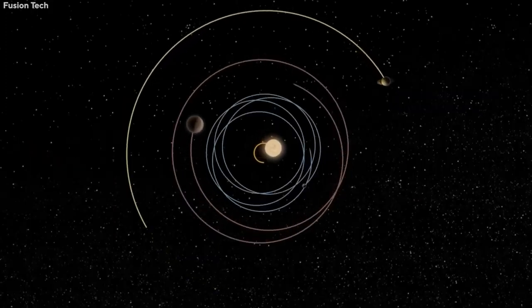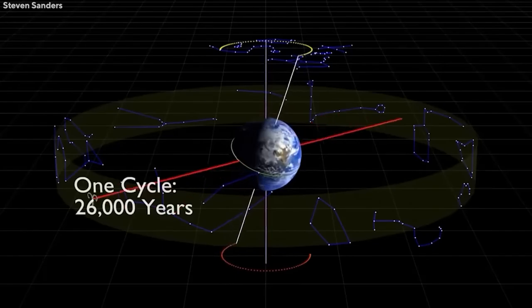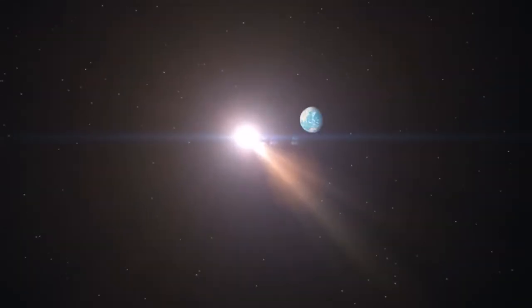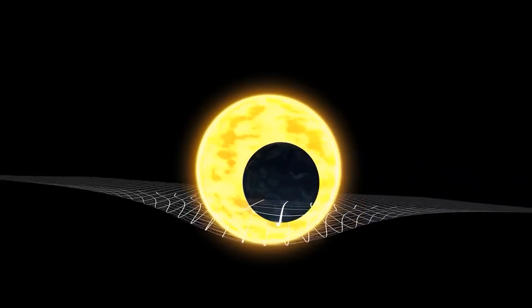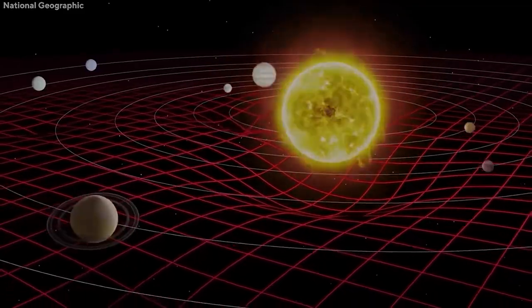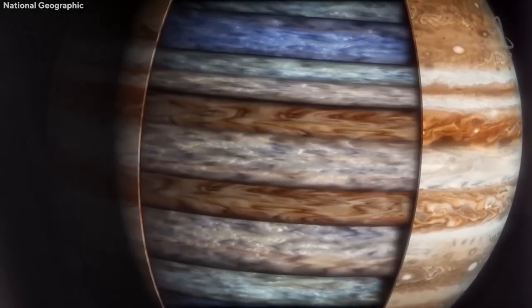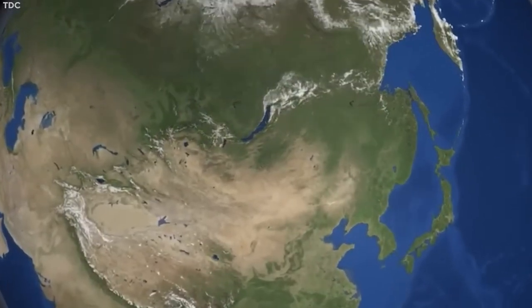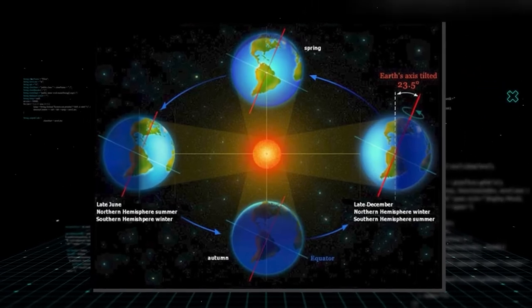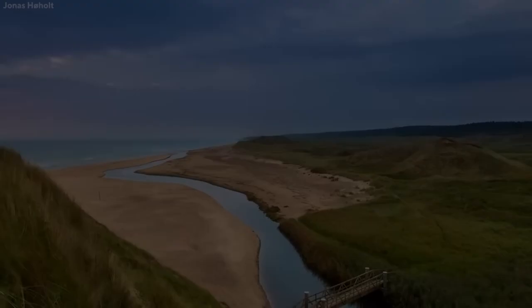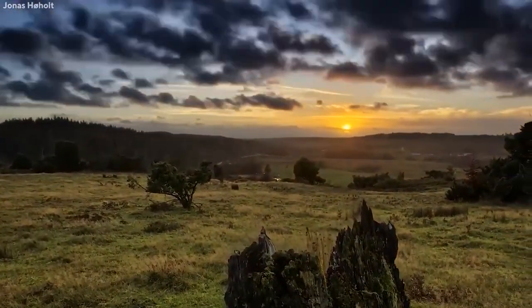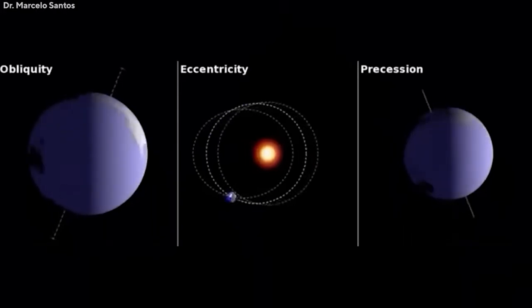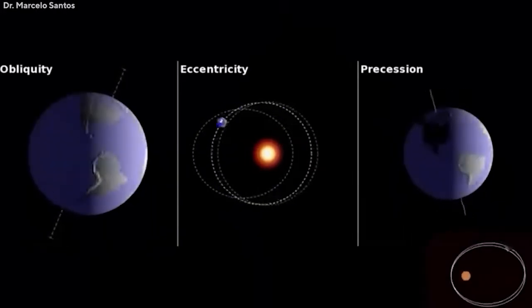The first cycle is the orbital eccentricity variation of the Earth. Earth's orbit is one of the most circular in the solar system, but this has not always been the case and will change in the future. These changes are primarily caused by the gravitational pull of Jupiter and Saturn and affect the length of our seasons. In a nearly circular orbit the length of seasons is roughly equal, but as the orbit becomes more elliptical the length of the seasons begins to vary, which can cause significant climate change over long periods of time.